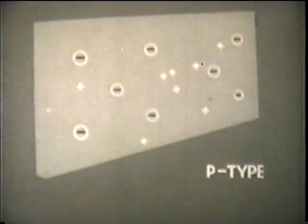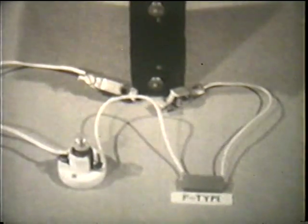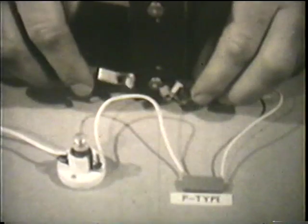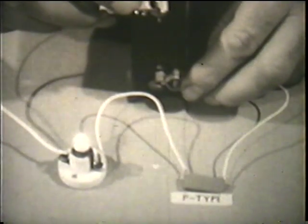A semiconductor like this is known as P-type, P for positive carrier. The impurity atoms, because they try to collect electrons, are known as acceptor atoms. Here is a piece of P-type germanium. It looks like ordinary germanium, and current will flow through it in either direction as with the N-type germanium.